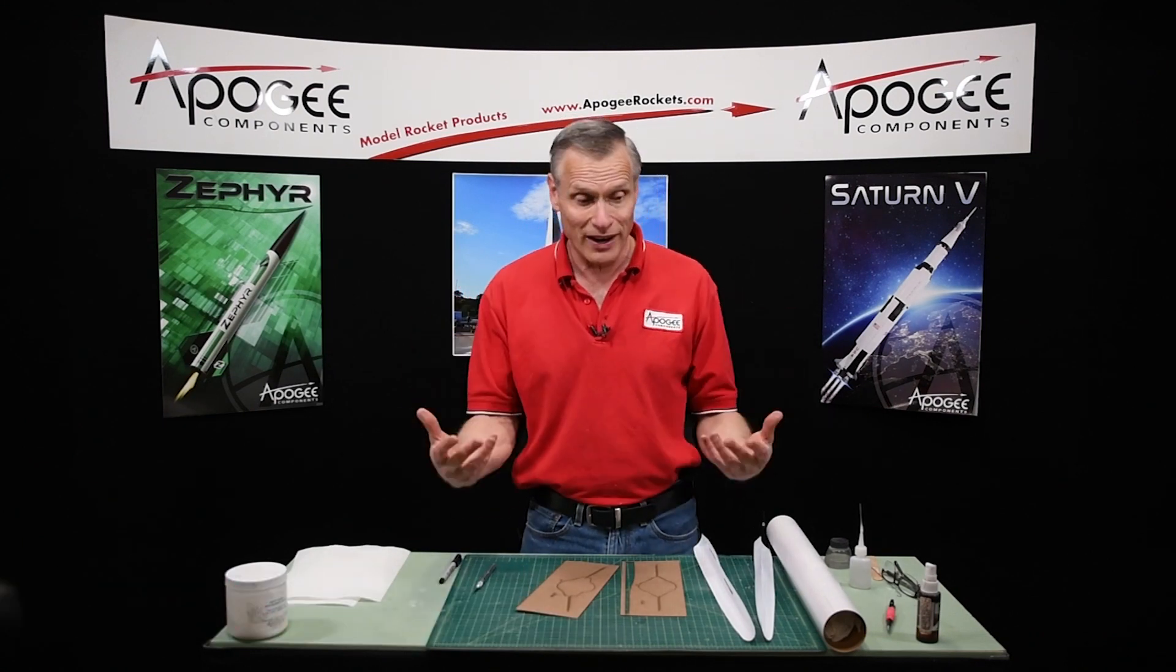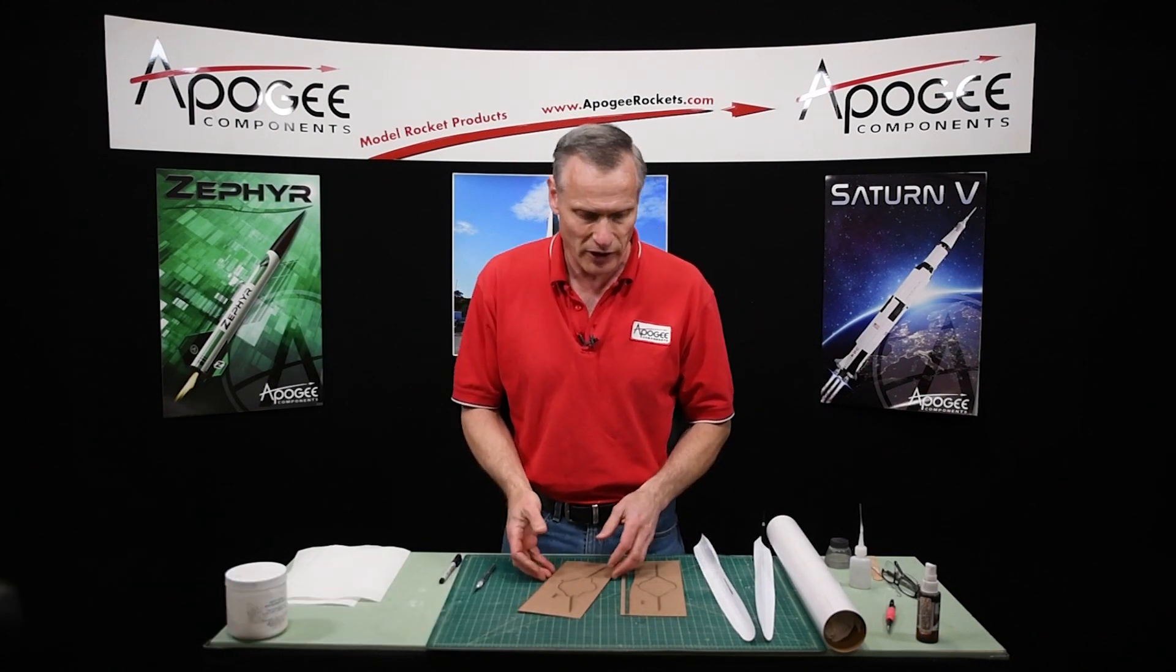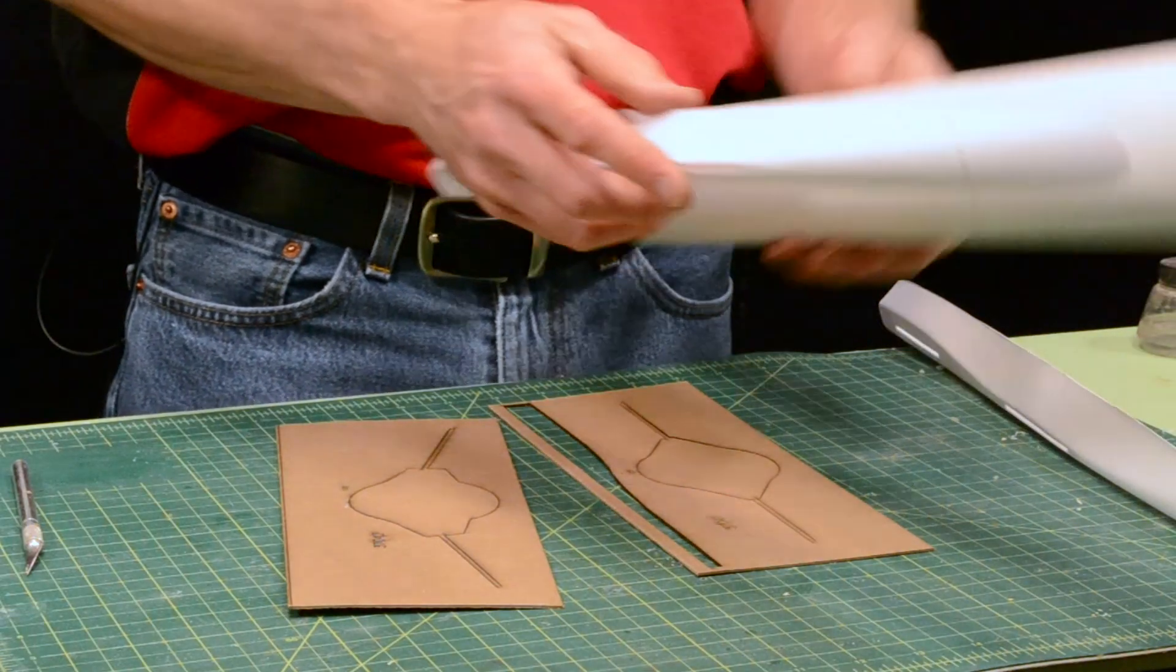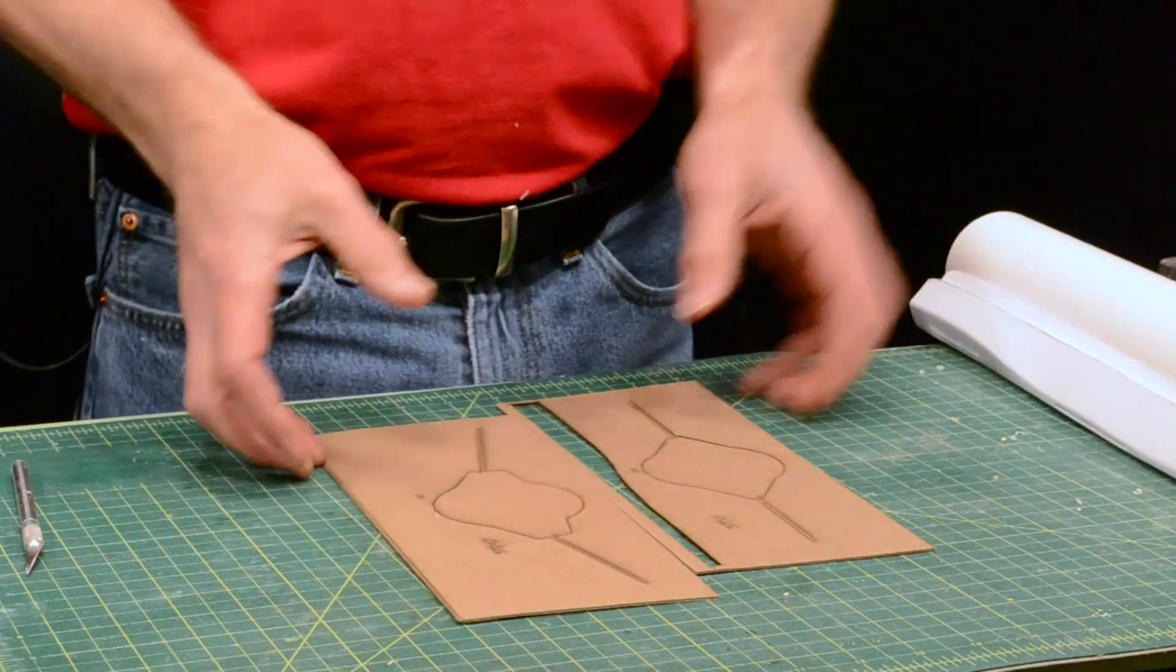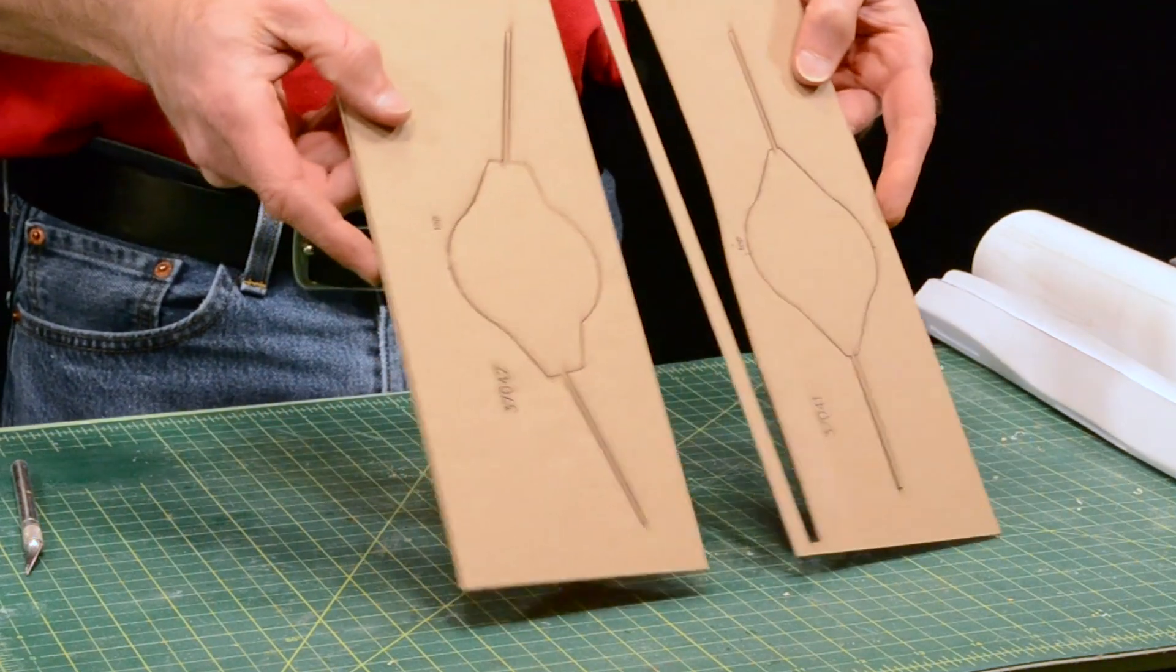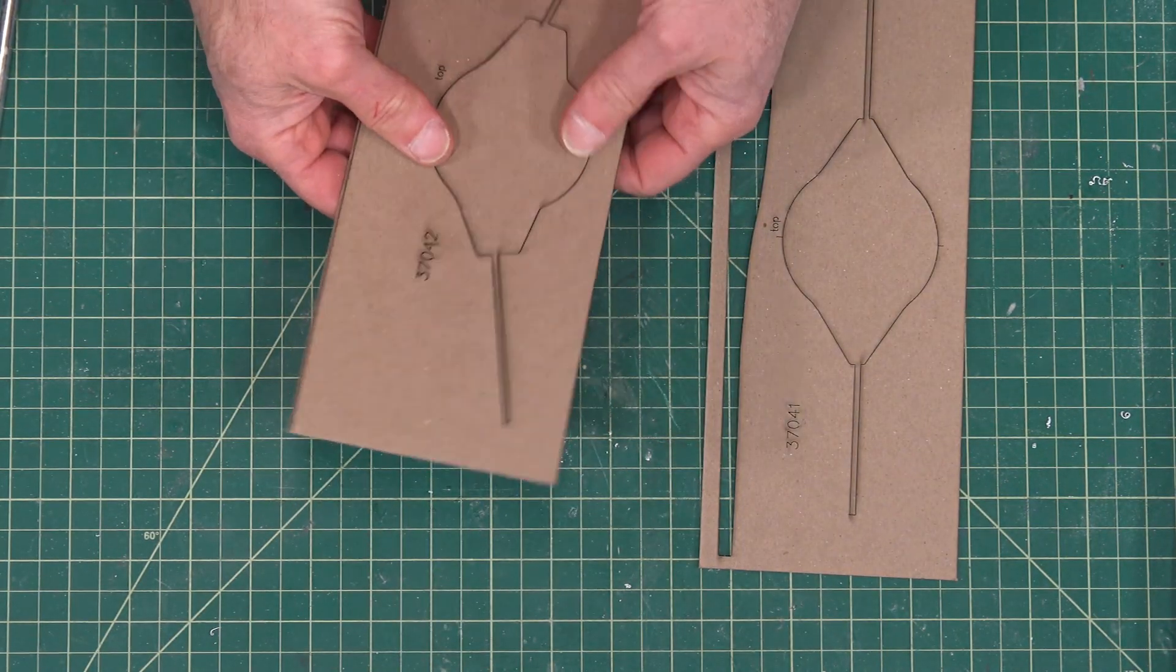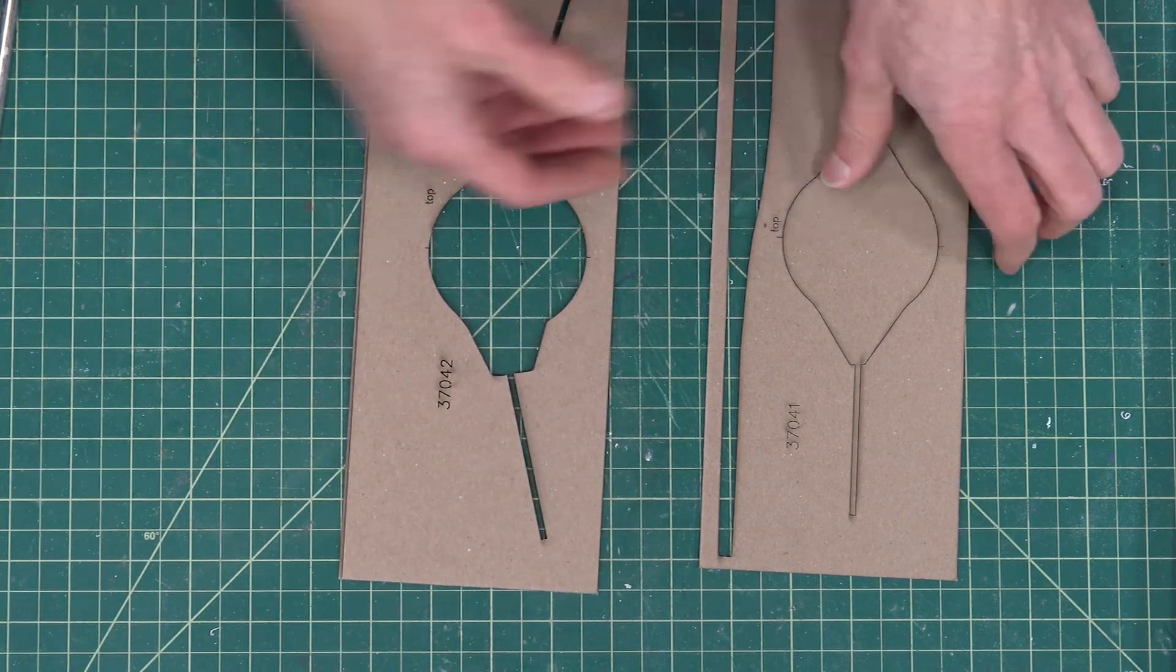Okay this is the step that I really enjoy doing because now the rocket's going to really start coming together really fast. We're going to glue the fairings to the side of the rocket. To do that we're going to need the two alignment templates. So go ahead and pop these out of the cardstock.